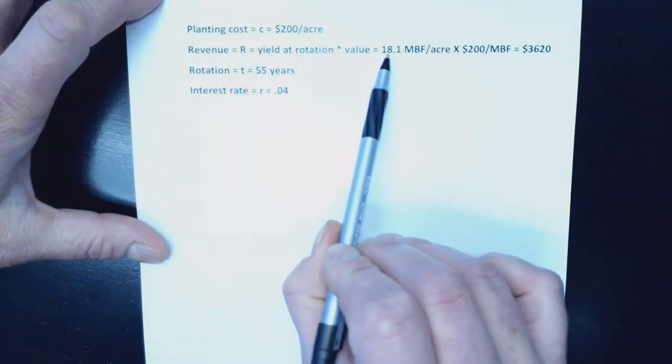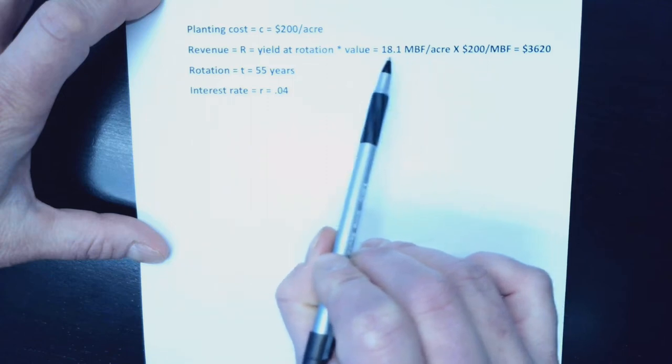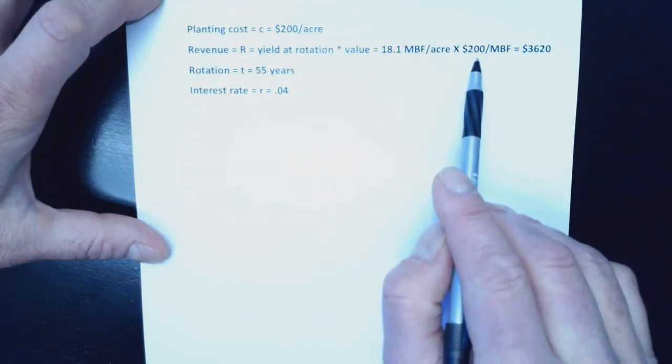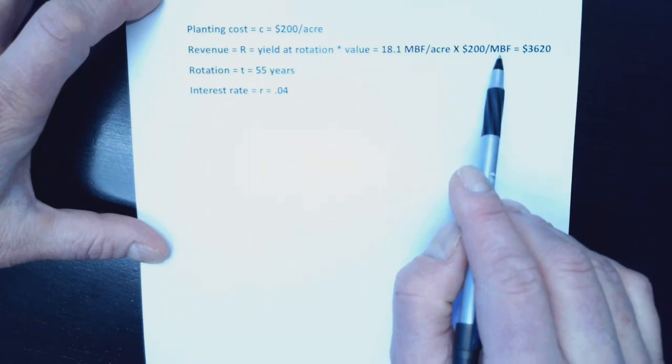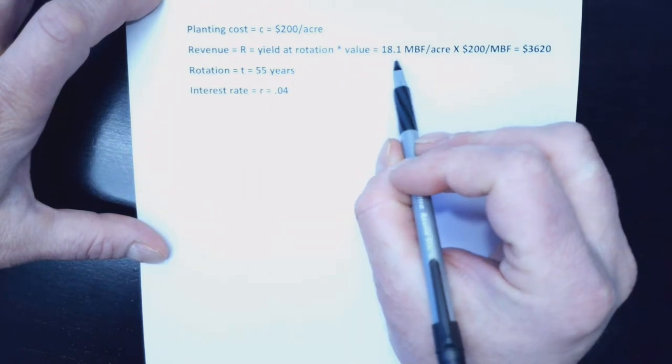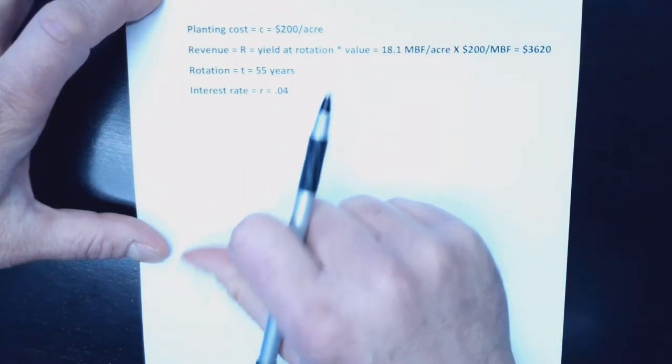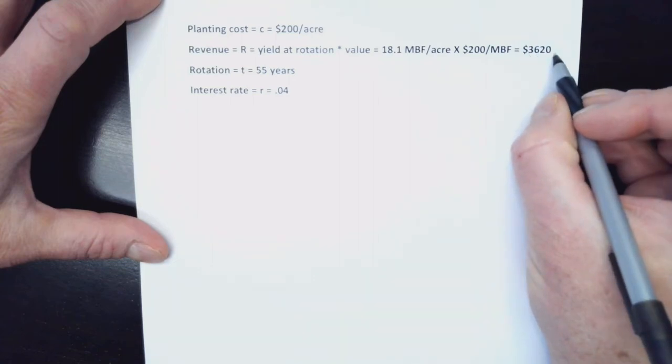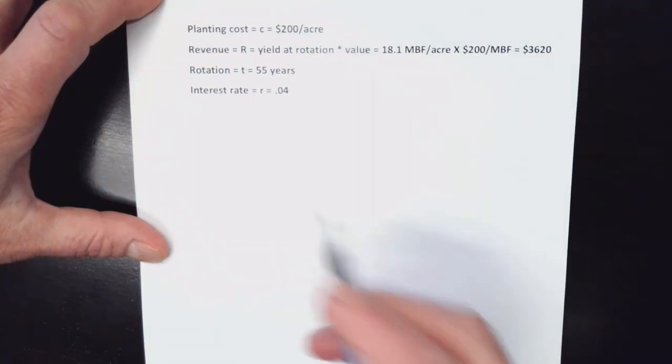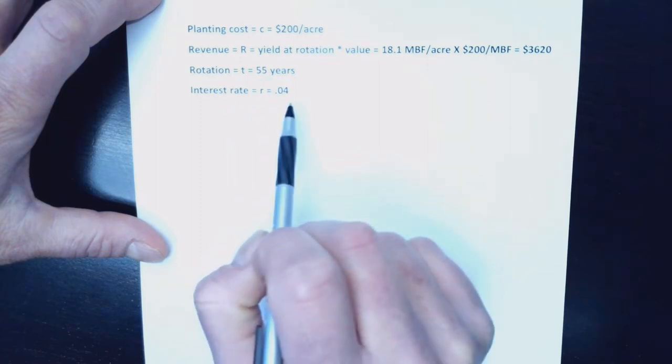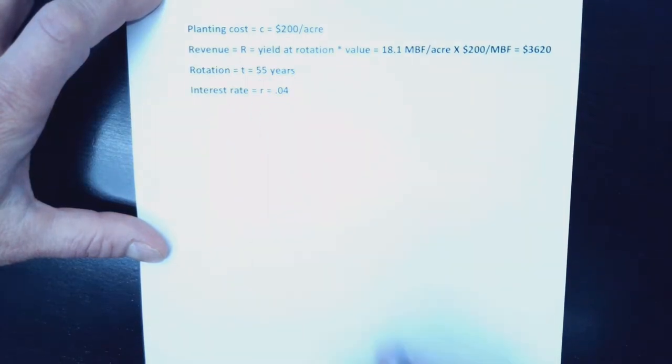so 55 years, the rotation T, we're going to have 18.1 thousand board feet per acre. This is logs, and we're going to get paid $200 per MBF, these thousand board feet. So we have 18.1 of these per acre, we're going to get paid $200 per one of those, which means we're going to get $3,620 of revenue at year 55. We're using a 4% discount rate to evaluate this.